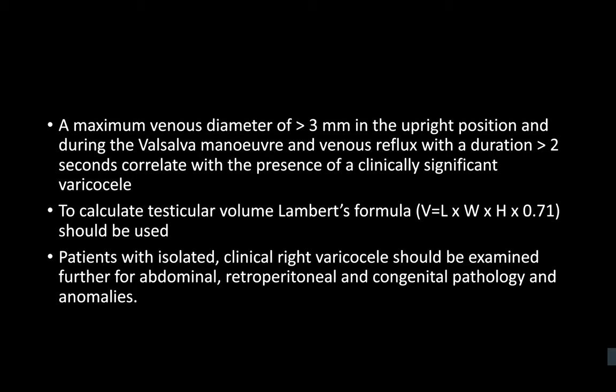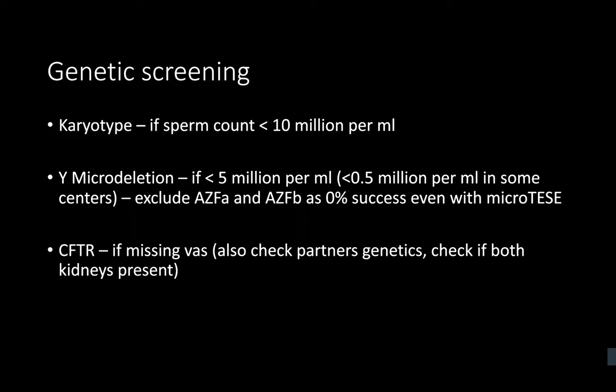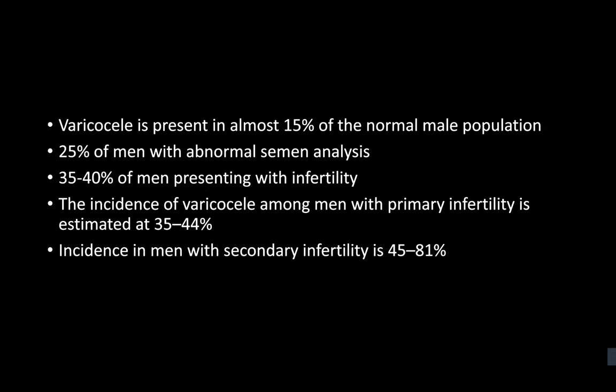Varicocele is seen in approximately 15 percent of the general population. In men presenting with primary infertility, this figure increases to between 35 to 40 percent. In men with secondary infertility, the figure is between 30 to 45 percent — and according to some literature it can go up to 80 percent in cases of secondary infertility.